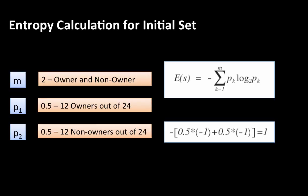If you have 12 owners and 12 non-owners in a set, that's as impure as it can be. If you had 8 owners and 16 non-owners, you could say it's predominantly non-owners. If all 24 are owners, entropy would be zero — no confusion. But at 50/50, that's as much confusion as you can have, and the entropy turns out to be 1.